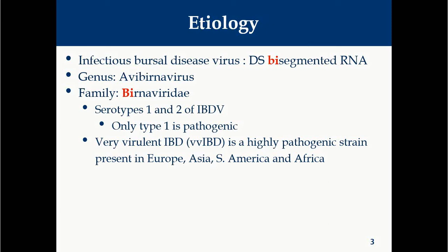This virus can be divided into two main serotypes by virus neutralization test: serotype 1 and serotype 2. Among these two serotypes, only serotype 1 is pathogenic. Both serotype 1 and serotype 2 can affect ducks and turkeys but do not cause disease in these species.